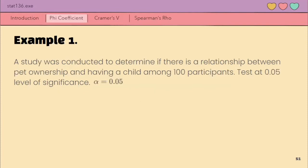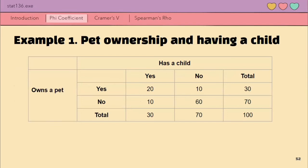So, let's go to the examples. Example one, a study was conducted to determine if there is a relationship between pet ownership and having a child among 100 participants. Test at 0.05 level of significance. Basically, this question is testing whether may association ba ang pagiging pet owner and pagiging parent ng mga participants. So, this is our data given.